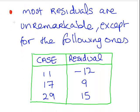Let's say most of the residuals from our 30 cases are pretty much unremarkable, around zero, plus 3 to minus 3. But we have some unusual cases. Case 11 has a residual of minus 12, case 17 has a residual of 9, and case 29 has a residual of 15.